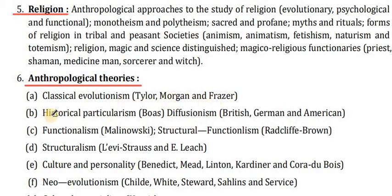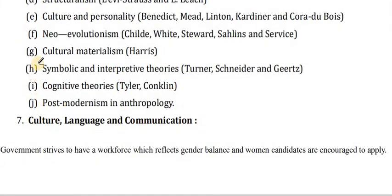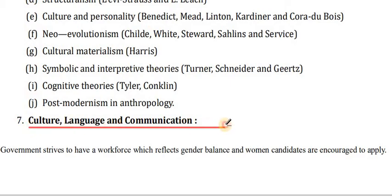Point 6 covers anthropological theories: classical evolutionism — Tylor, Morgan and Frazer; historical particularism — Boas; diffusionism — British, German and American; functionalism; structural-functionalism — Radcliffe-Brown; structuralism — Lévi-Strauss and Leach; culture and personality — Benedict, Mead, Linton, Kardiner and Cora Du Bois; neo-evolutionism — White, Steward, Sahlins and Service; cultural materialism — Harris; symbolic and interpretive theories — Turner, Schneider and Geertz; cognitive theories — Tyler and Collins; and postmodernism in anthropology.